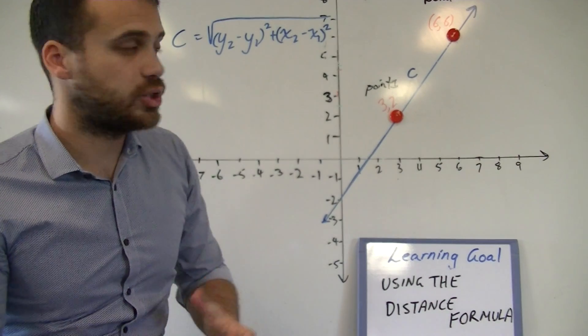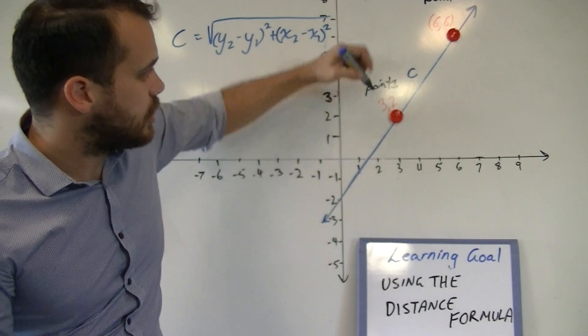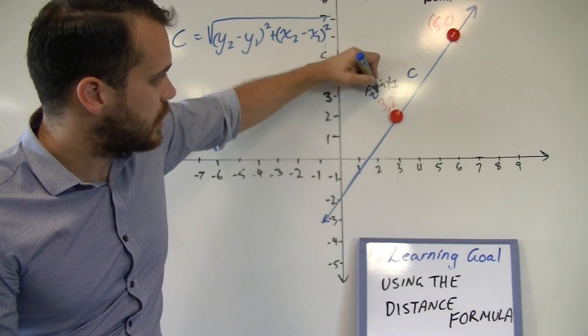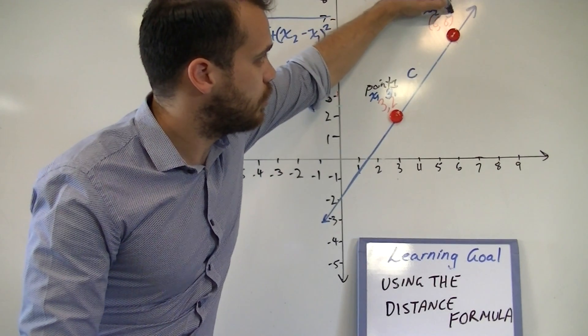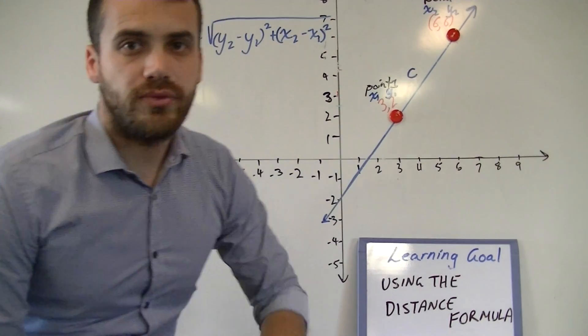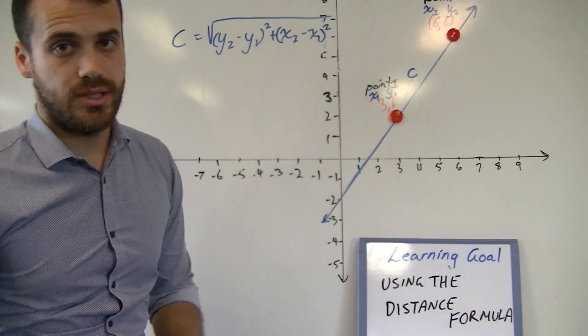You will find it much easier if you label each individual coordinate. So, I'm going to call this x1, y1, and this x2, y2. Once you've got all of that, it's really just a matter of taking that and plugging it into your distance formula.